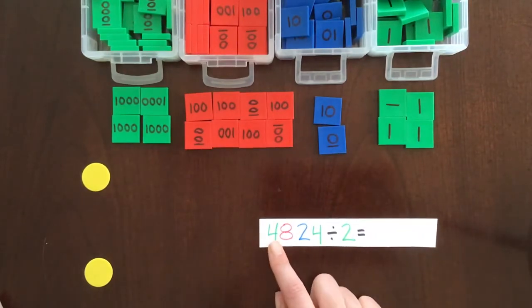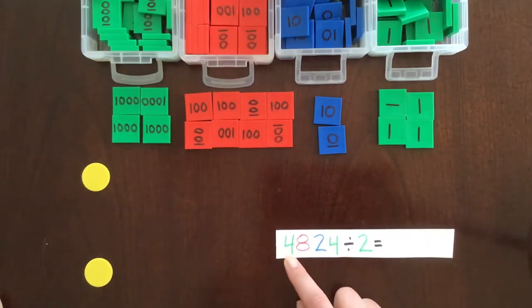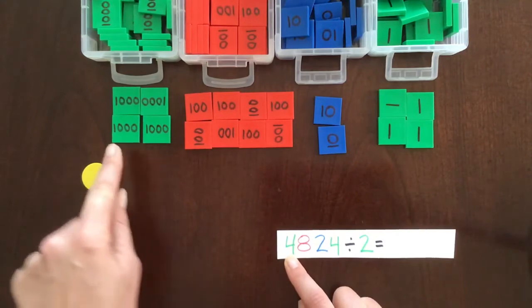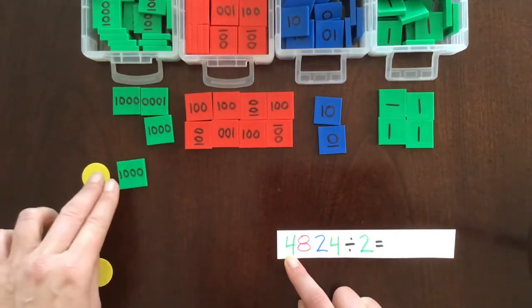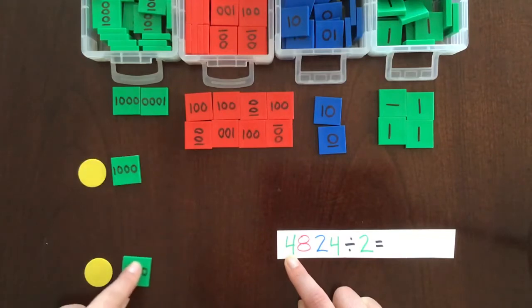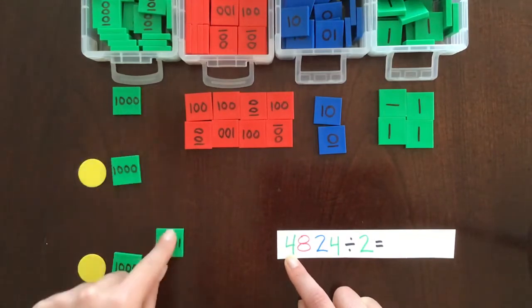Okay, so we're going to divvy up these stamps, and we're going to start with the biggest place value. In this case, it's the thousands. So each of these little markers gets an equal amount of thousands.